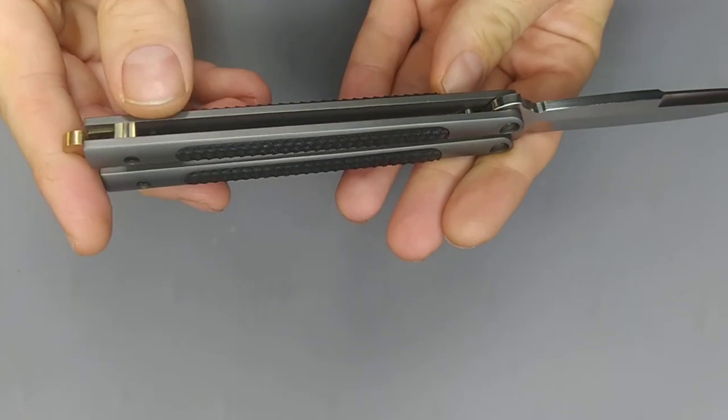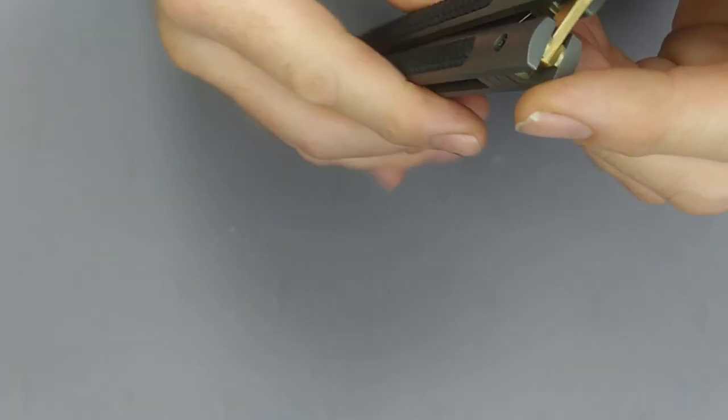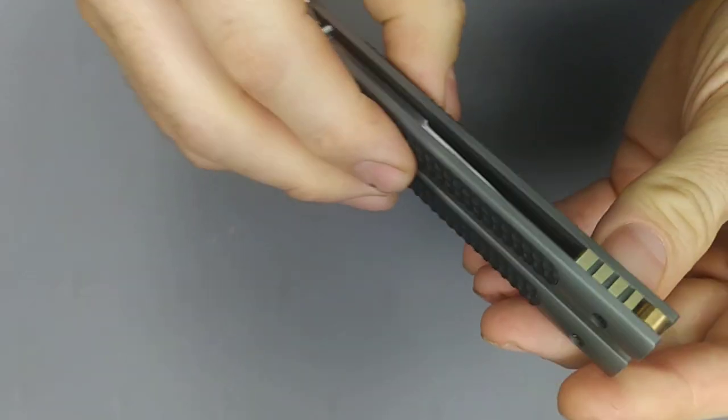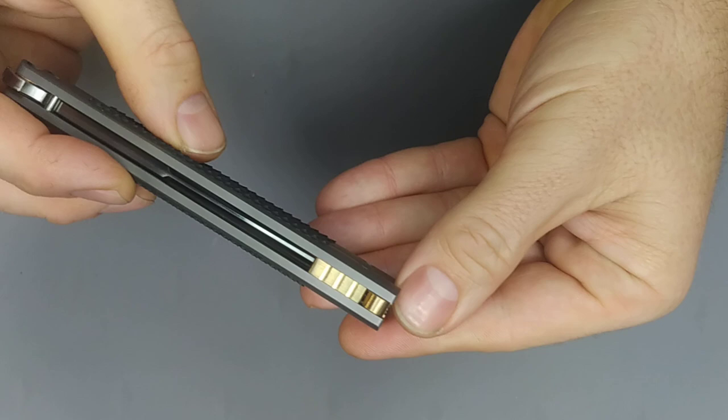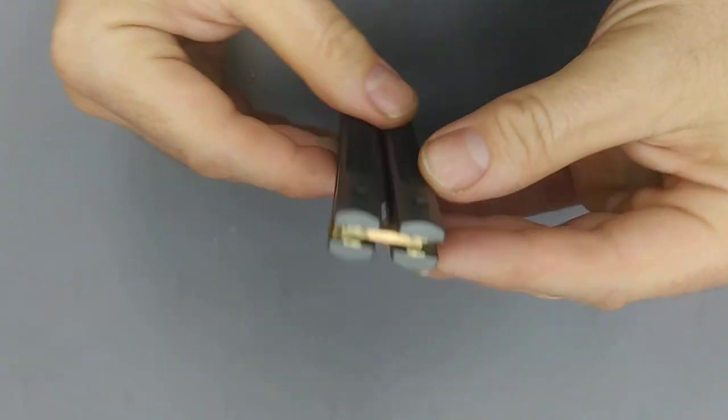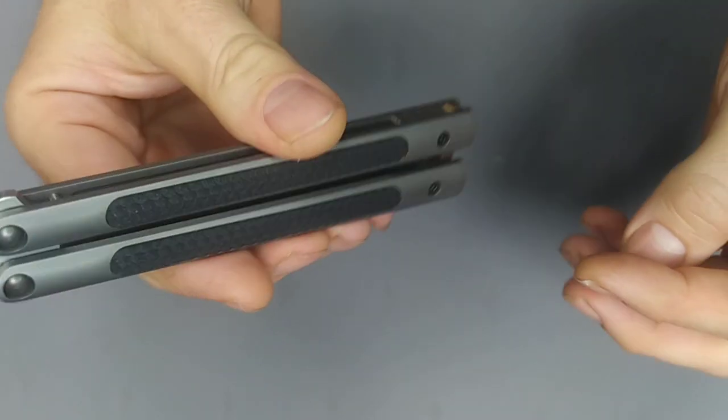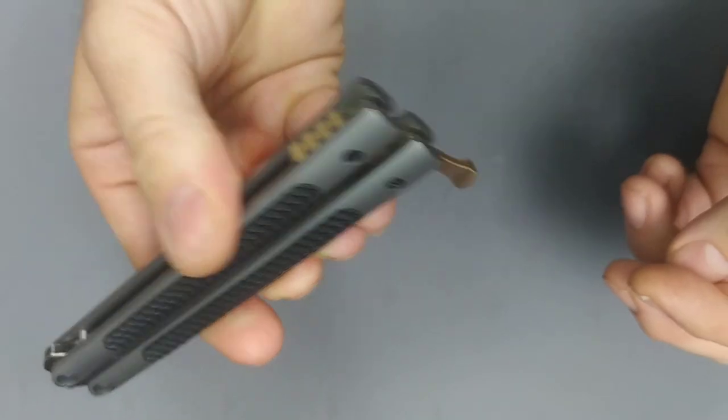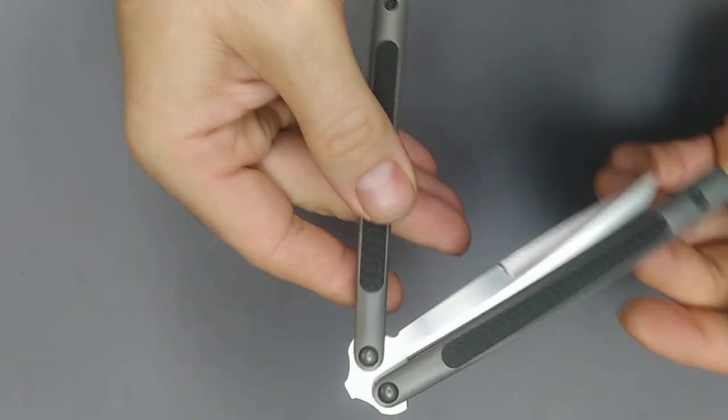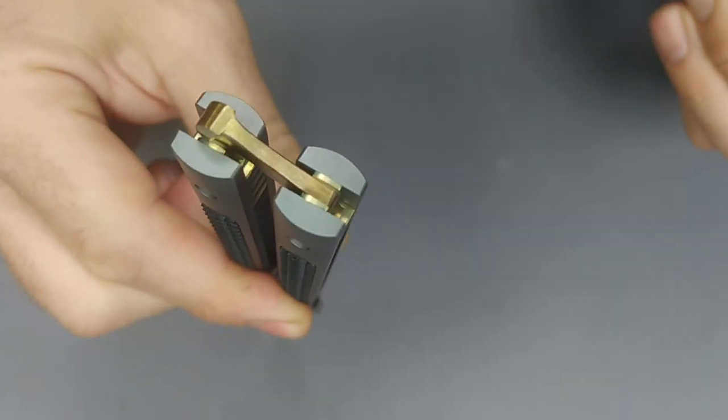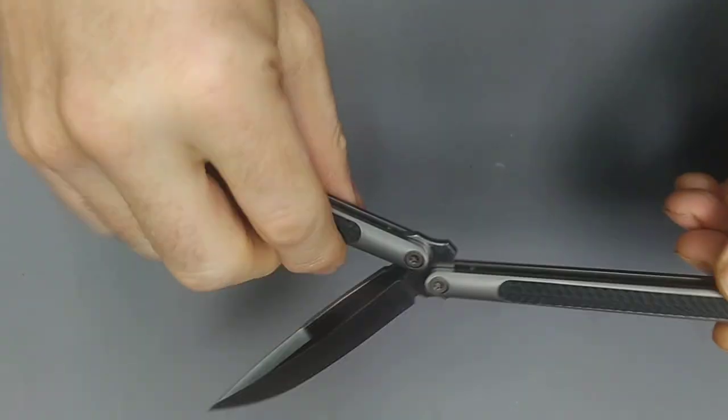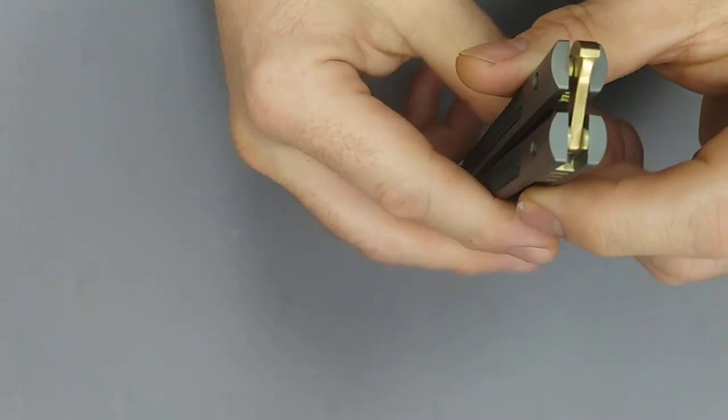Check out the tolerances here. Gold anno on the backspacer and a good action on the latch. Really no play, hardly. There you go.